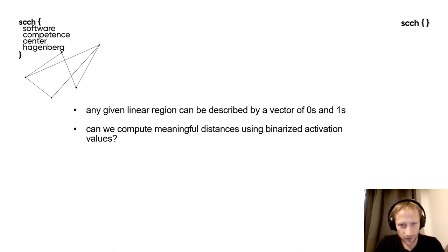From our definition, it stems that any given linear region can be described by a vector of 0s and 1s. They will describe the relative position of our sample point with respect to any other linear region. The idea is if we can compute meaningful distances using binarized activation values.